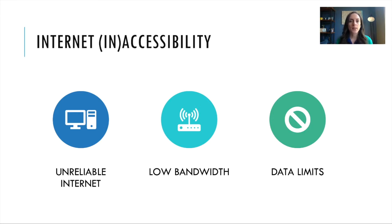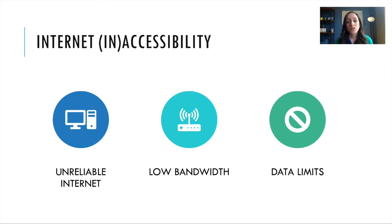And lastly, data limits. If you've ever had a cell phone with a data limit plan, you know that you have to be careful about how much you access the internet or download. So if we're having students download a file that is multiple megabytes and we've got multiple files like that, that can eat into a data plan — especially if those students are using internet via a tethering system off a mobile phone. That can really hinder how much they can download. So keeping file sizes low can also help with data limits that students may run into.